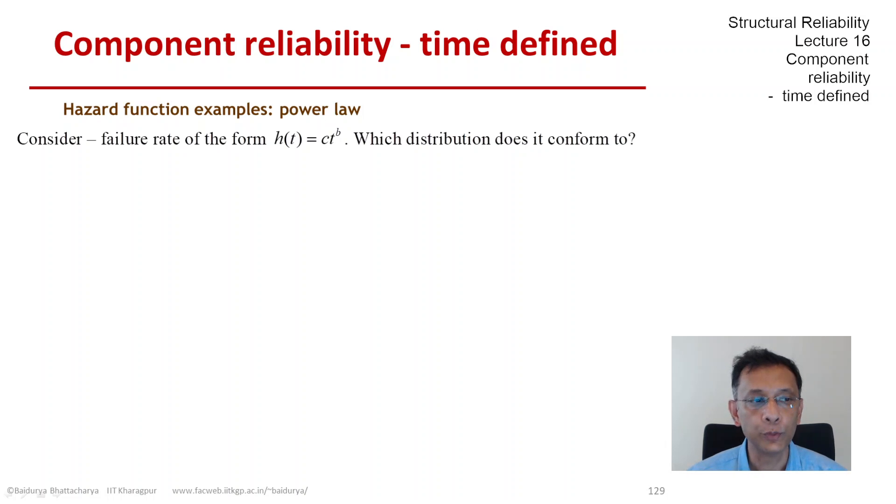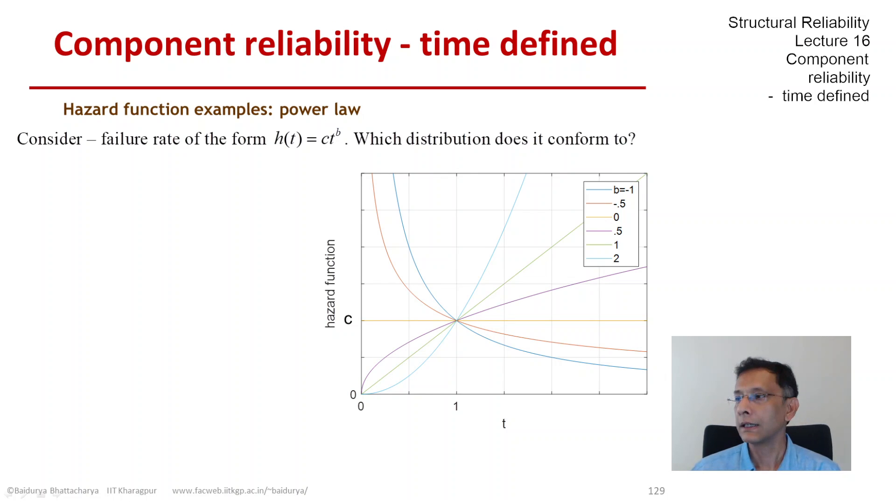Let's derive that step by step. If we plot h versus t, we see that as a power law does, it's capable of reproducing all sorts of shapes. When b is zero, we get the constant hazard function, constant failure rate, so immediately we see that this corresponds to the exponential time to failure.